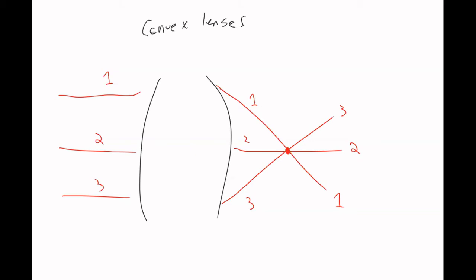Ray 2 enters into the center of the lens, and then it just passes through as a straight line on the other side — it doesn't get refracted. The center line just goes straight through; it has to be symmetric about this line. Because ray 2 is right in the middle, it needs to stay on the middle to be symmetric. This point in the middle is called the focal point.